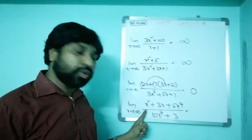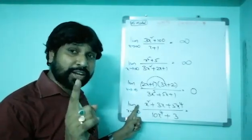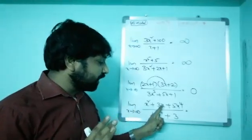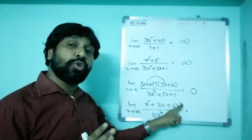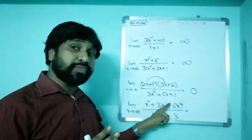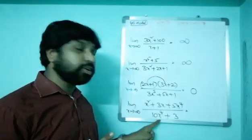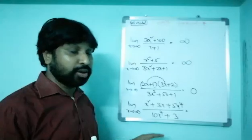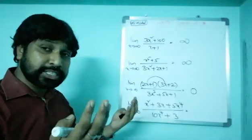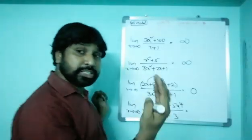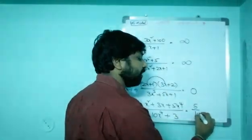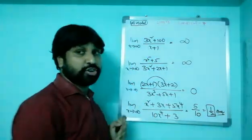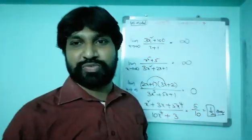Last question: look at the highest power in the numerator — the coefficient of x power 4 is 5. In the denominator, the power is also x power 4, and its coefficient is 10. Both powers are equal, so this is yesterday's model. Whenever powers are equal, the highest power coefficients give your answer: 5 divided by 10 equals 1/2. The answer is 1/2. I hope you enjoyed the shortcuts — thank you very much friends.